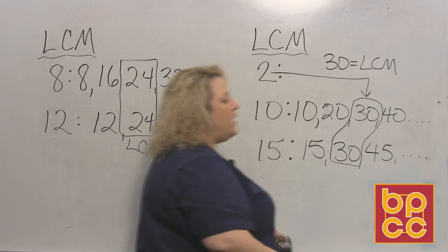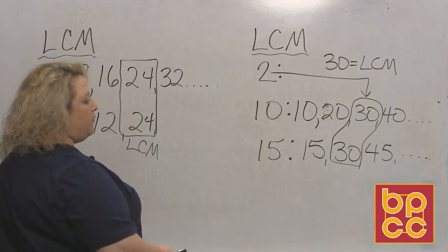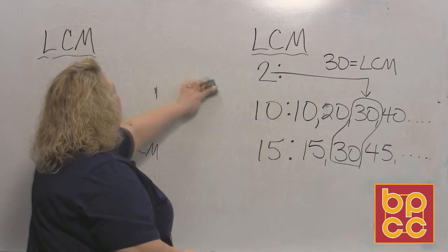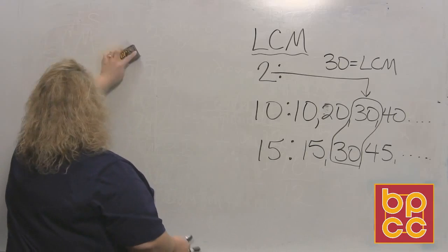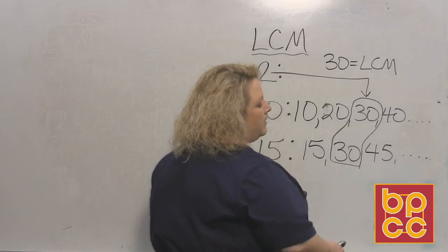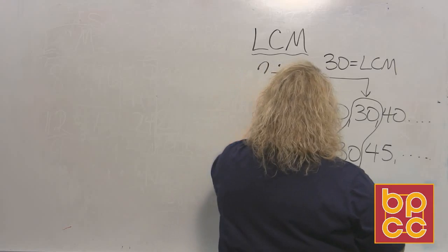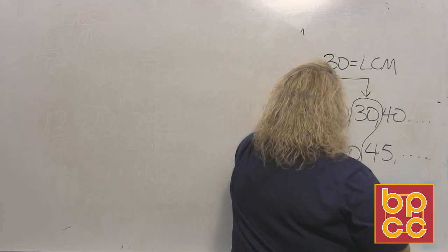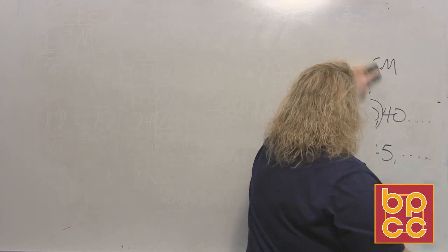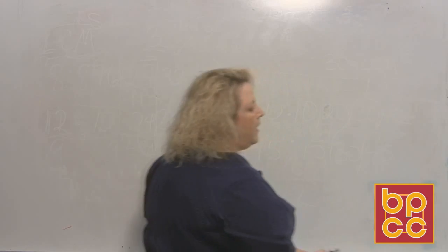Now, sometimes you can do it a different way to find the least common multiple. Same concept. We're going to list factors. We're going to go backwards instead of listing least common multiples. We're going to list factors and find it that way.